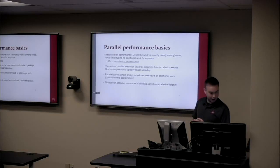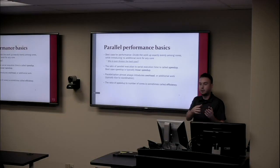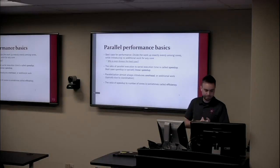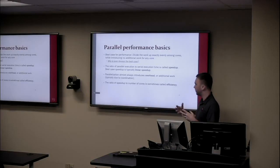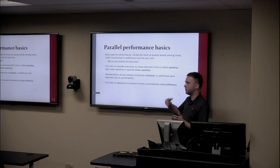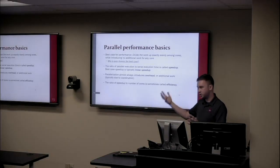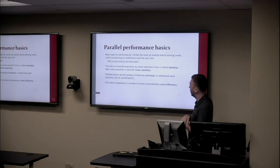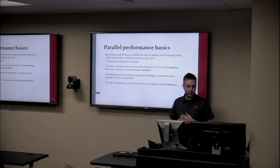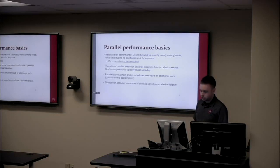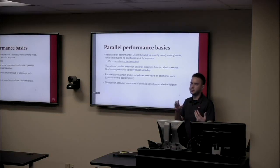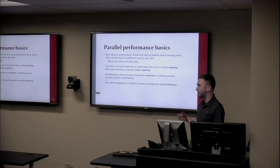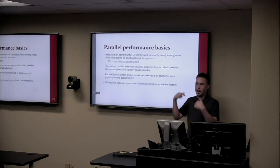The best case for performance when parallelizing is to divide work exactly evenly among computing units while introducing absolutely no extra work. This rarely happens — when it does, there's a funny word for it: embarrassingly parallel. Even division is the best case because any idle core means work isn't being done, stretching out total time. The ratio of speed in the parallel case to the serial case is called speedup. The best case — no extra work, perfectly even distribution — is called linear speedup. Unfortunately, parallelism almost always introduces extra overhead from contention over shared resources like storage or RAM, and from coordination between cores.